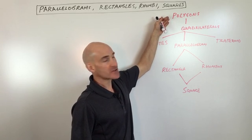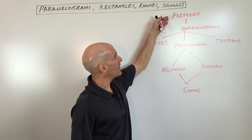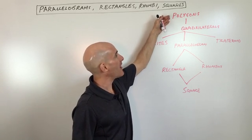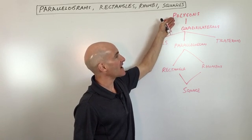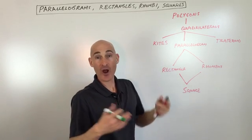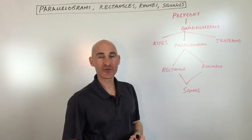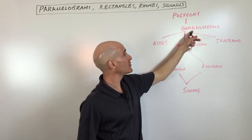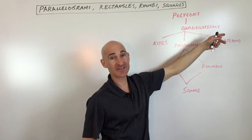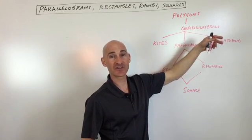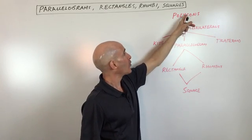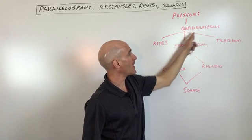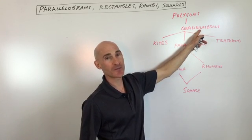What we have here at the uppermost trunk of the tree is polygons. Polygons could be triangles — those have three sides — quadrilaterals, four-sided figures, pentagons, five-sided figures, hexagons, and so on. But what we're doing is we're focusing on the quadrilaterals here, the four-sided figures.